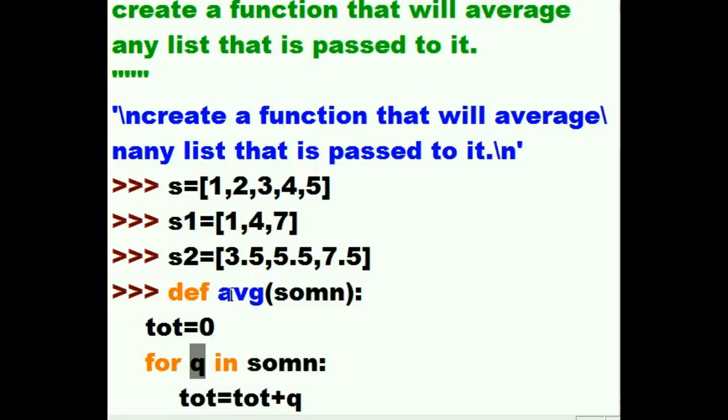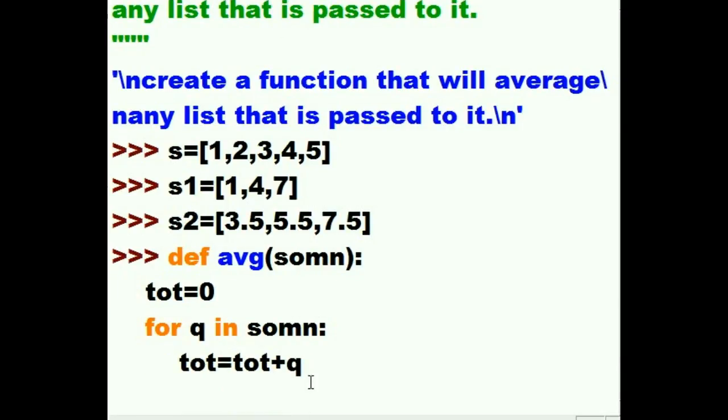Now it jumps up here, q now is pointing to 4. q has 4 in it now. Jump down here, total equals 1 plus 2, that's 3, plus 3, that's 6. Plus 4, that's now equal to 10. 6 plus 4 is 10. So total now has 10 in it. Jumps up here, because we still got one more to go. q is now equal to 5. Jumps down here. Total, which is equal to 10, is equal to itself, 10, plus what? q, that's 5. So that's now 15. Total now has 15 in it. Okay, that's how this works.